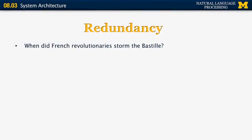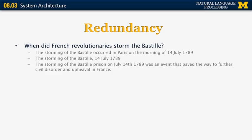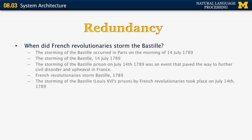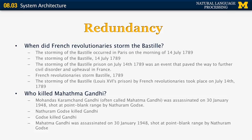A few more examples: 'When did French Revolutionaries storm the Bastille?' Answers include: 'The storming of the Bastille occurred in Paris on the morning of 14th July 1789,' 'The storming of the Bastille, 14th July 1789,' 'The storming of the Bastille prison on July 14th, 1789,' and 'French Revolutionary Storm Bastille, 1789.' Another example: 'Who killed Mahatma Gandhi?' Answers include: 'Gandhi was assassinated by Nathuram Godse,' 'Nathuram Godse killed Gandhi,' 'Godse killed Gandhi,' and 'Gandhi was assassinated, shot at, by the same person.' This illustrates how much paraphrasing and linguistic variability matter for question answering.